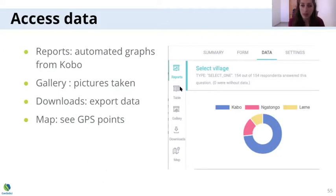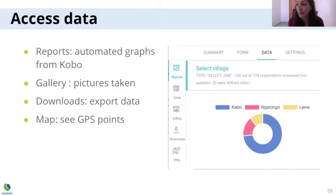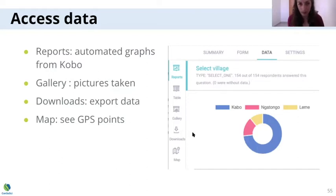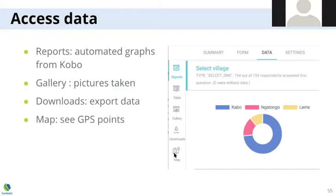You have the raw data in your table, the gallery with pictures, and you can download the data using the download option. You can export a CSV file, an Excel file, a zip file containing all your images, or a KML file if you want to export only the GPS points. So you have multiple export options, and you can also use the mapping option in Kobo to see your points on a map.